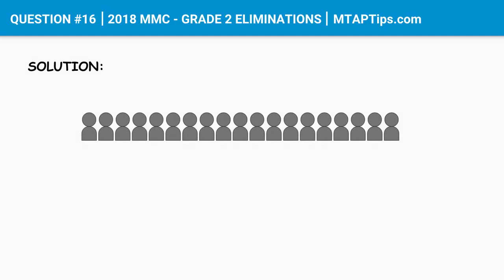Let's imagine these are the kids sitting in the stadium. The 6th kid is Juan, and the 18th kid is Pedro. The question was: how many kids are there between Juan and Pedro? So we only need to look for the kids between them.